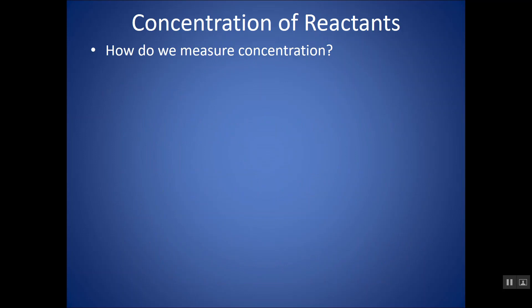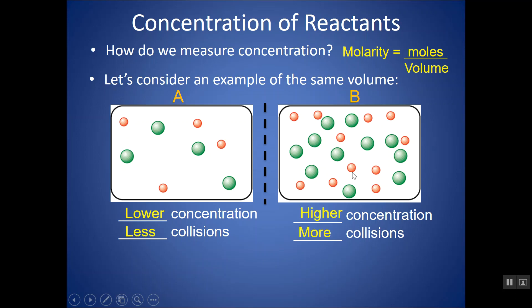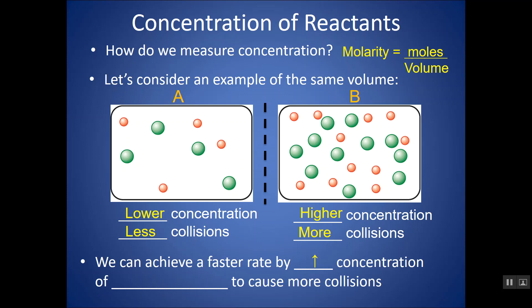Concentration of reactants is another factor. We measure concentration with molarity, which is moles of solute over liters of solution. Here's A and here's B — they have the exact same volume but different numbers of molecules. In A, I have less moles for the same volume, so I have a lower concentration. In B, I have a higher concentration. B would have more collisions because I have more particles and obviously more chances of them colliding. So we can achieve a faster rate by increasing the concentration of reactants — increasing the concentration of products wouldn't have this effect because they've already reacted.